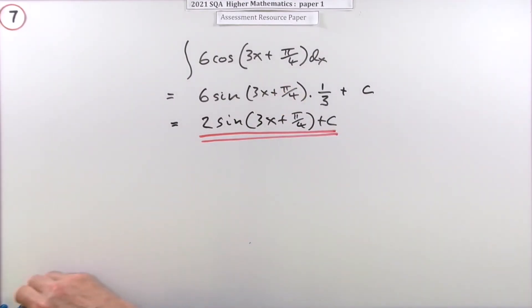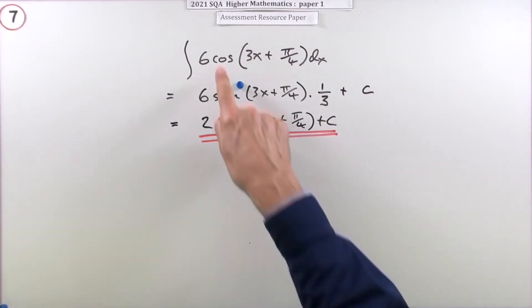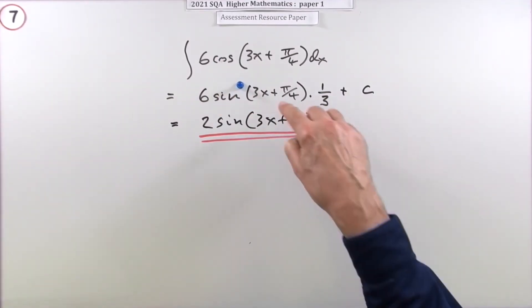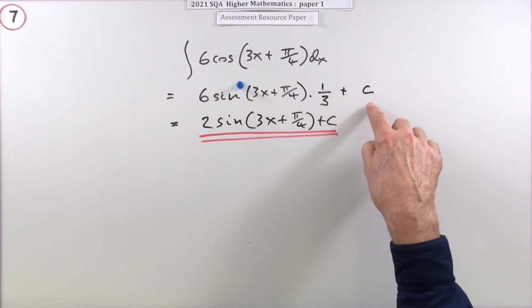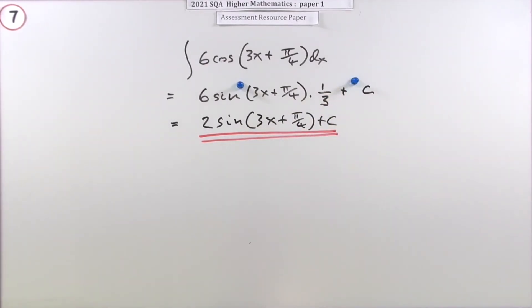And the two marks they put in were one for doing the outer part. In other words, cos goes back to sine. And the other was for knowing to divide by the inner derivative. So it'd be times a third. And add on the constant.